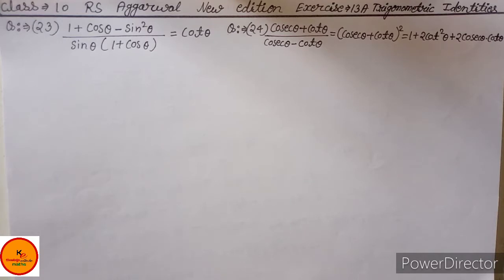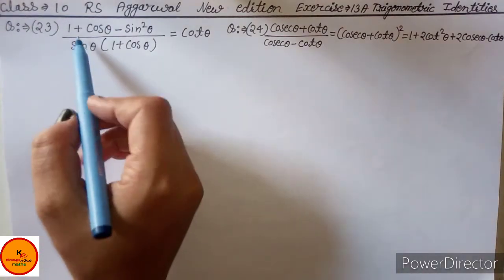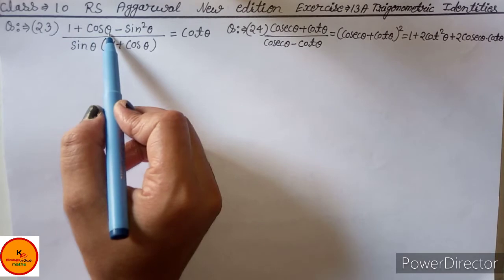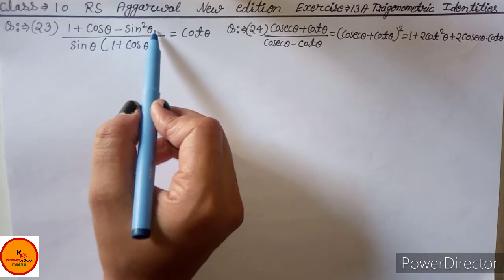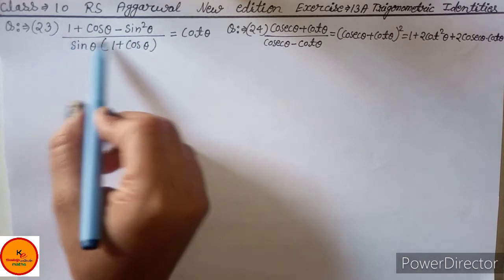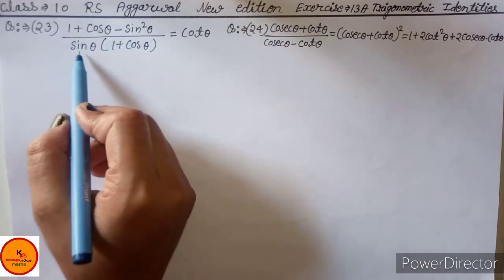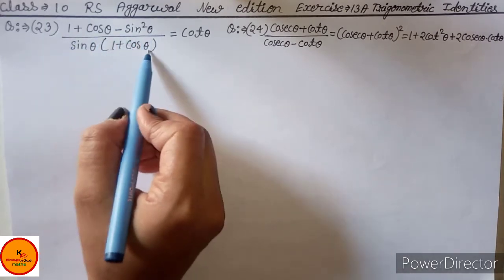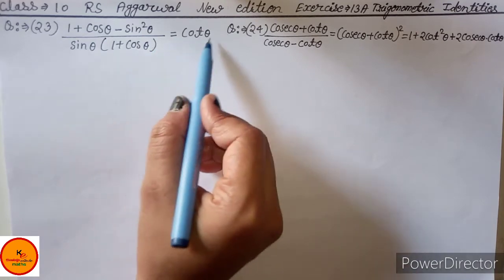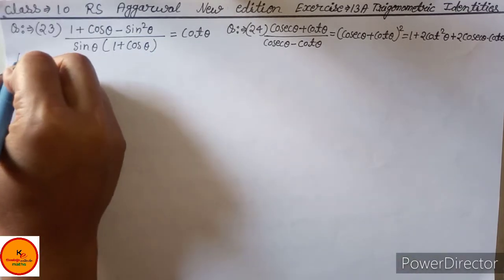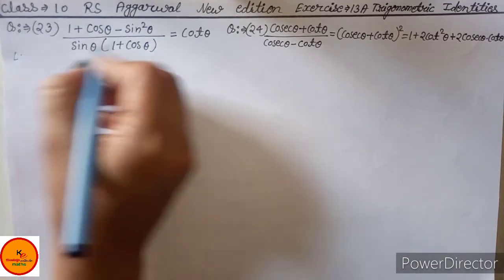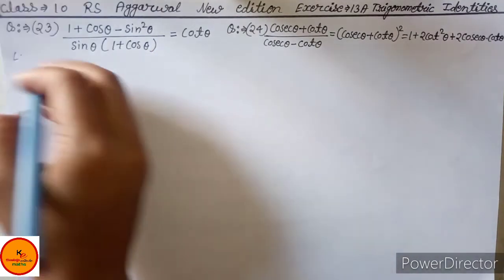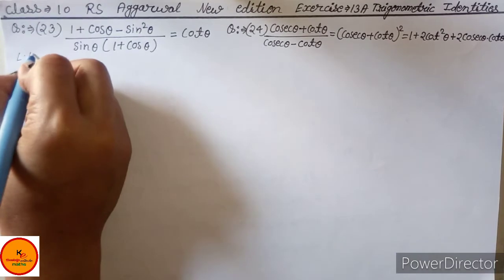Question No. 23 is: 1 plus cos theta minus sin square theta, upon sin theta in bracket 1 plus cos theta, is equal to cot theta. So we have to prove this. The RHS is cot theta, so we will take the LHS part.